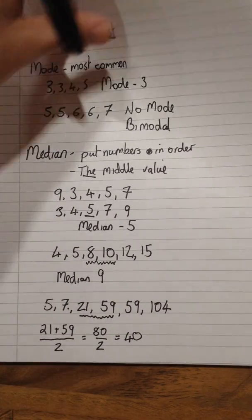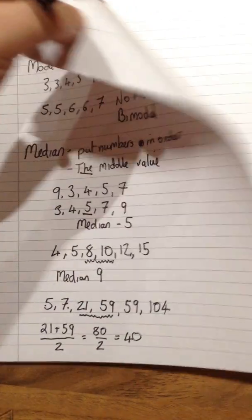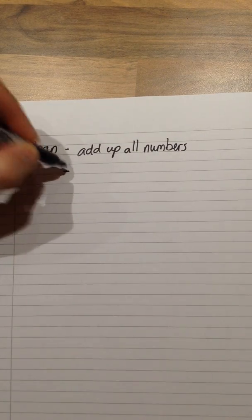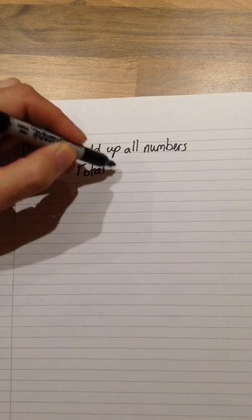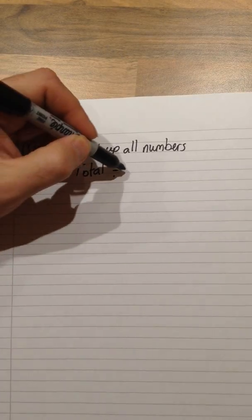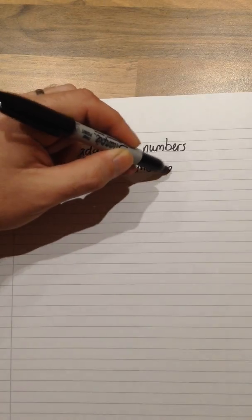The next average that we are going to look at is the mean. If we are looking for the mean, this just like the median is a two step process. Step number one is we add up all the numbers. Step number two is we take this total, the sum of all the numbers, and we divide by the number of numbers.